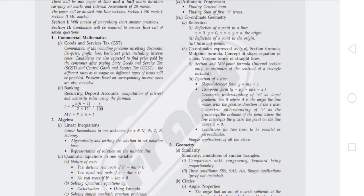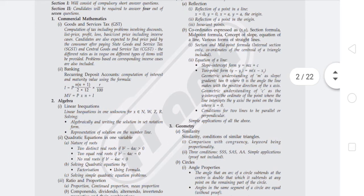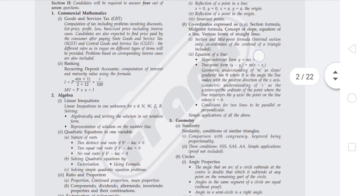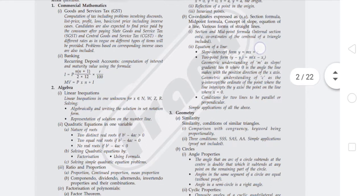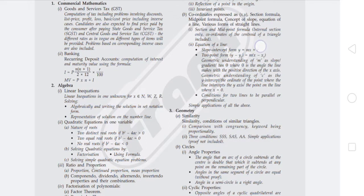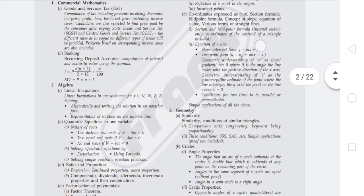Now let's check the chapter-wise reduced syllabus. In Commercial Mathematics, Chapter 1 is Goods and Services Tax (GST). In this chapter you have to learn computation of tax including problems involving discounts, list price, profit, loss, basic or cost price including inverse cases.